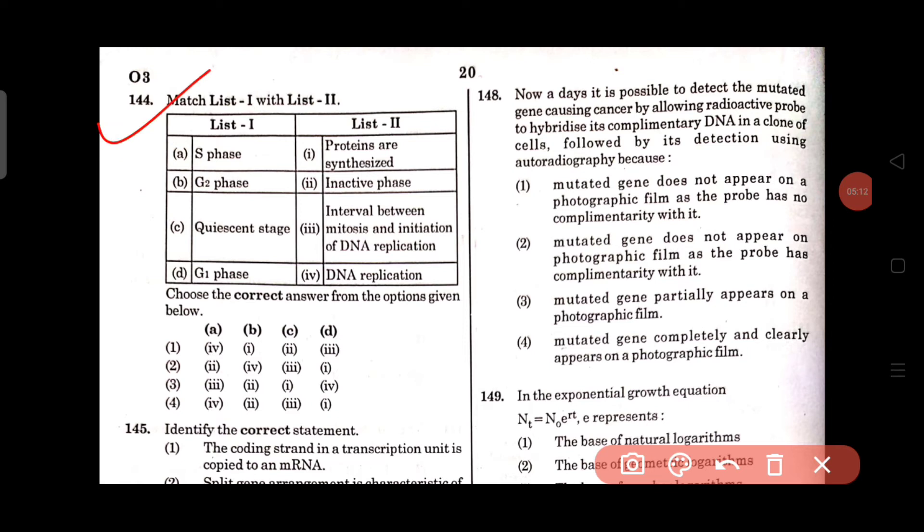Question number 144: Match list 1 with list 2. In S phase, DNA replication takes place. In G2 phase, proteins are synthesized. Quiescent stage is known as inactive stage. And the G1 phase is the interval between mitosis and initiation of DNA replication. Option 1 is the right answer for question number 144.